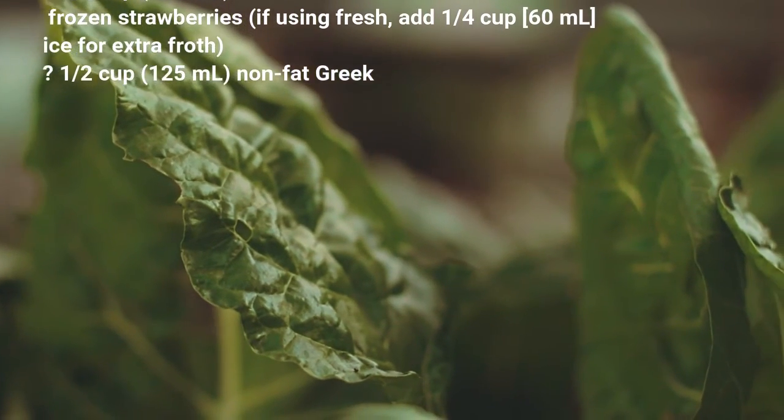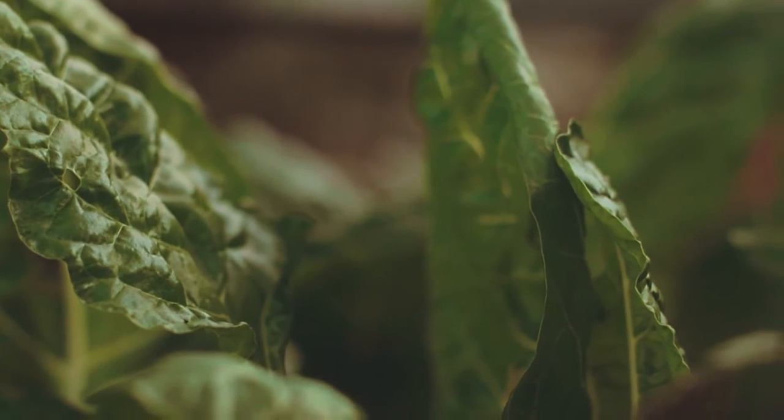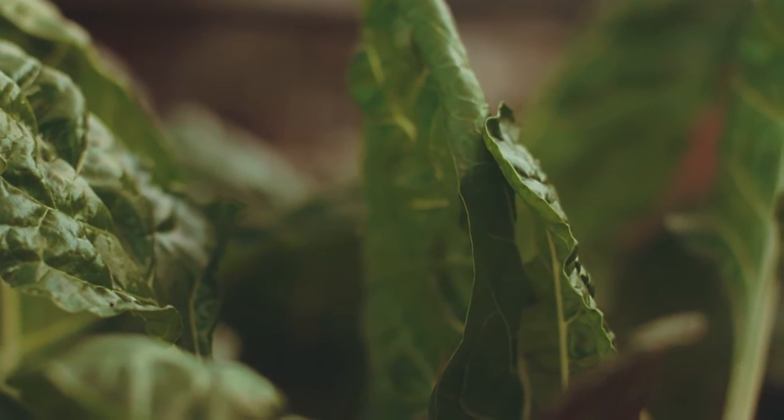C-Boost Smoothie: 1 large pink grapefruit peeled, seeded and cut into chunks, 1/2 cup (125 milliliters) crushed pineapple canned or fresh, 1/2 cup (125 milliliters) fresh or frozen strawberries (if using fresh, add 1/4 cup or 60 milliliters ice for extra froth), 1/2 cup (125 milliliters) nonfat Greek yogurt. Calories 159, 7 grams protein, 0 grams fat, 0 grams saturated fat, 35 grams carbohydrates, 5 grams fiber, 0 milligrams cholesterol, 26 milligrams sodium.